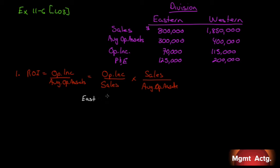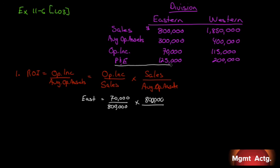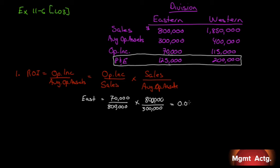For the East division: operating income is $70,000 divided by sales of $800,000, multiplied by $800,000 divided by average operating assets of $300,000. Be careful — the planting equipment listed is extra information included as a trick; we want average operating assets, which is $300,000. Our margin is 8.75% and our turnover is 2.67, giving us a total ROI of 23.33%.